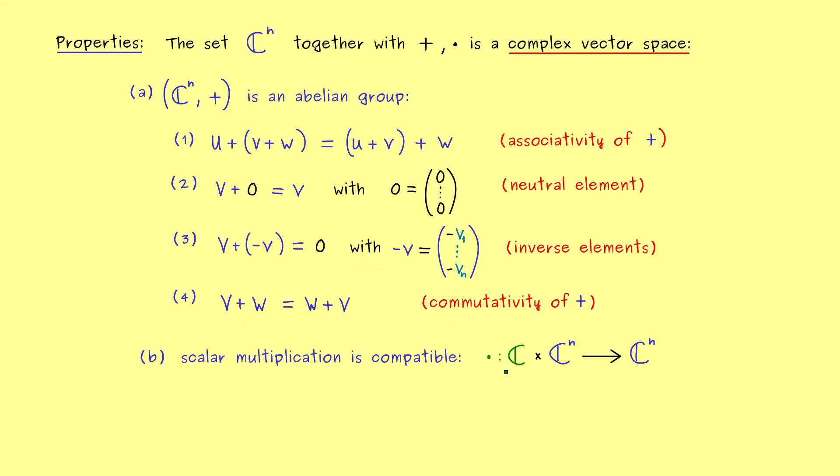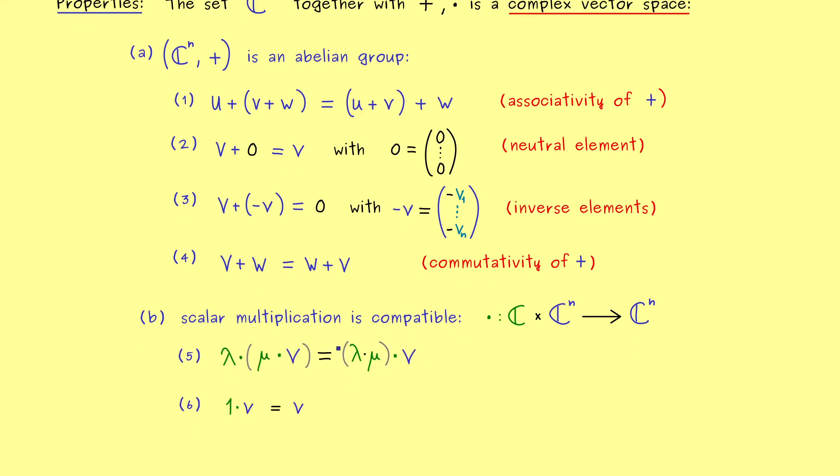Okay and then we go to our second operation the scalar multiplication. And this one has two inputs, a scalar from C and a vector from C^n. And of course the output is again a vector from C^n. And now we say that this operation is compatible if we can mix it up with the multiplication in C. And moreover scaling with the unit element in C should not change the vector at all.